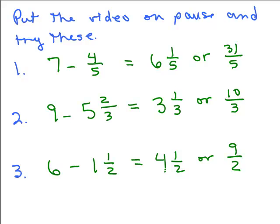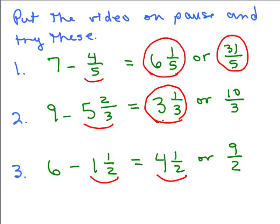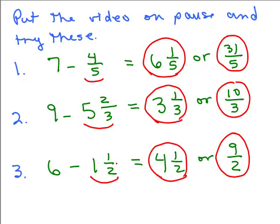The way to check your answer: add the answer back to what you were subtracting — you should get back to the original number. For example, 4 fifths plus 6 and 1 fifth is 6 and 5 fifths, which is 7. Adding 5 and 2 thirds plus 3 and 1 third gives 8 and 3 thirds, which is 9. And 1 and 1 half plus 4 and 1 half adds up to 6. It doesn't matter whether you write your answer as a mixed number or improper fraction.